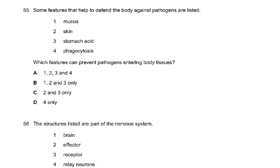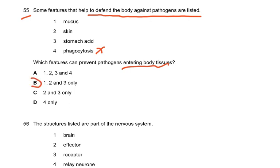Question 55: features that help defend the body against pathogens include mucus in the trachea (which traps pathogens and cilia sweep upward), skin (which prevents pathogens from entering tissues), and stomach acid (which kills pathogens and provides acidic pH for pepsin). Phagocytosis is wrong here because it only occurs after the pathogen has already entered the body — phagocytes exit the blood to kill the invading organism. The answer is B: features one, two, and three.